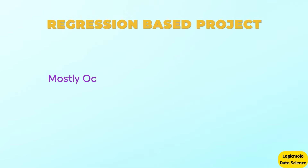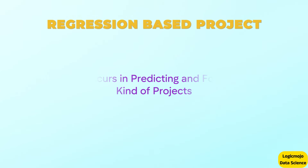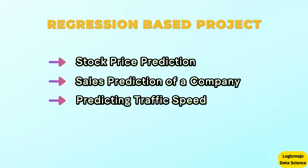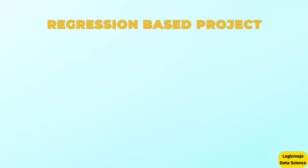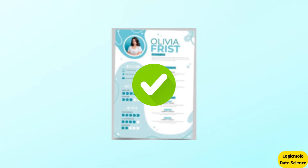After classification, you can also put regression-based projects in your resume. Regression-based projects mostly involve predicting and forecasting, like stock price prediction, sales predictions for a company, predicting traffic speed, predicting house prices, and forecasting weather. All these types of projects come under regression-based projects. The steps for developing this kind of project are also the same: data collection, data pre-processing, model selection, model tuning, training, and then deployment. Regression-based projects must also be present in the resume — that is very, very important.